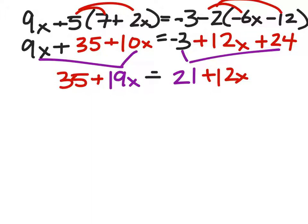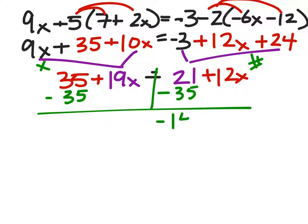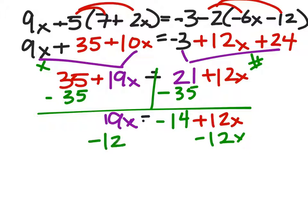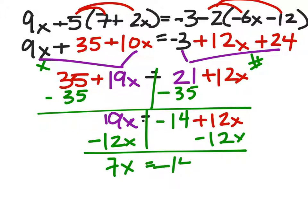I'll put the x's on the left and numbers on the right. I need to subtract 35 from both sides, giving negative 14, with 19x on the left. Then subtract 12x from both sides, leaving 7x equals negative 14. Dividing both sides by 7, x equals negative 2.